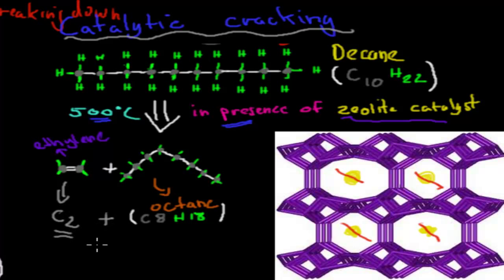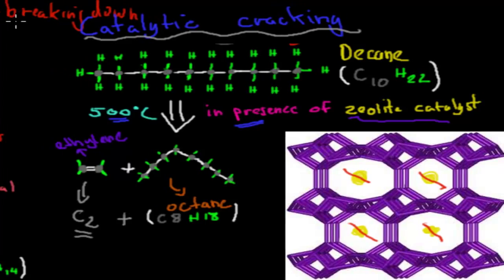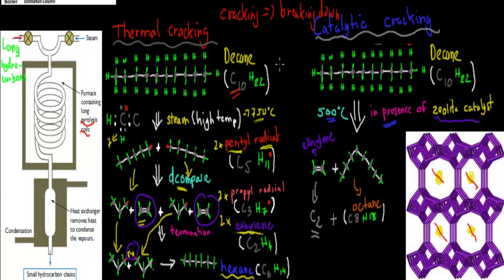That's the zeolite catalyst — it allows us to use less heat and still get the same job done, because it speeds up the reaction. There are two ways we can produce ethylene, which is a really useful molecule: either thermal cracking, which is using high temperatures to break it down, or catalytic cracking, which uses lower temperatures but with a zeolite catalyst. Now what I'm going to do next is go over the chemical equations for them.